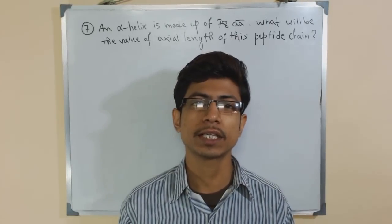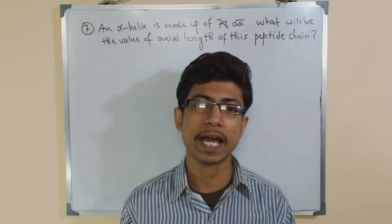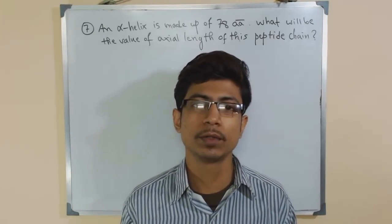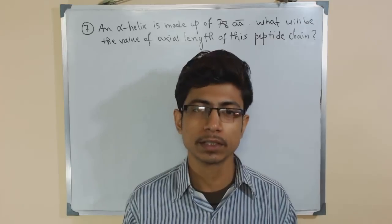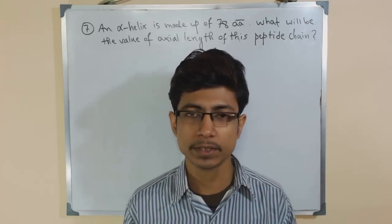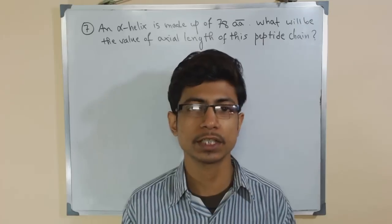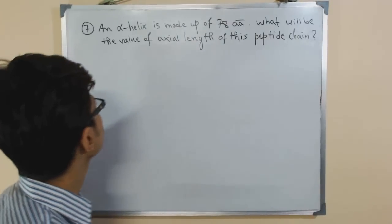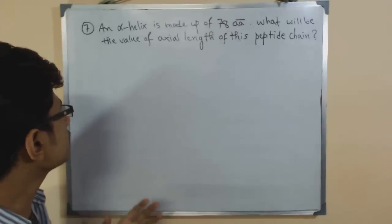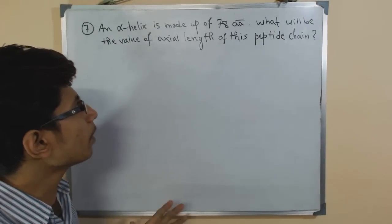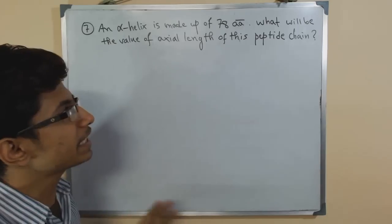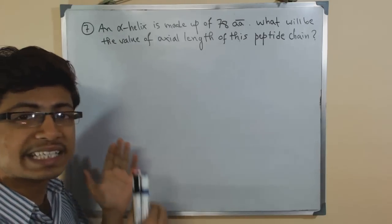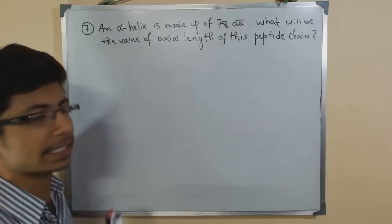Welcome back. We are talking about biology and mathematics — the connection. In this video we'll be talking about another question from biochemistry, and especially the structure of proteins. The question is: an alpha helix is made up of 78 amino acids — what will be the value of its axial length?